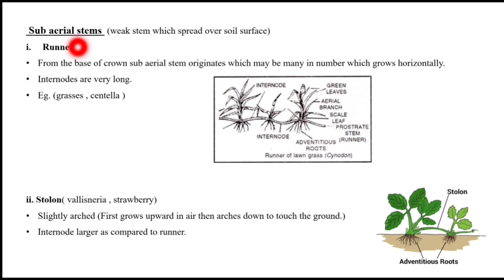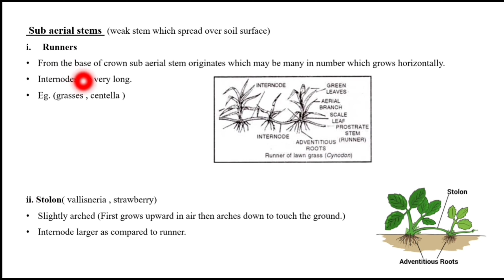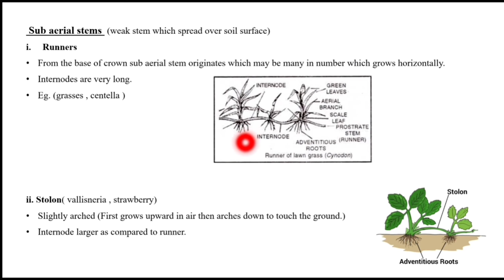Next is sub-aerial stems. Sub-aerial stems are weak stems which spread on the soil surface. Runners originate from the base of the crown and may be many in number; they grow horizontally with long inter-nodes. Examples are grass and Centella.